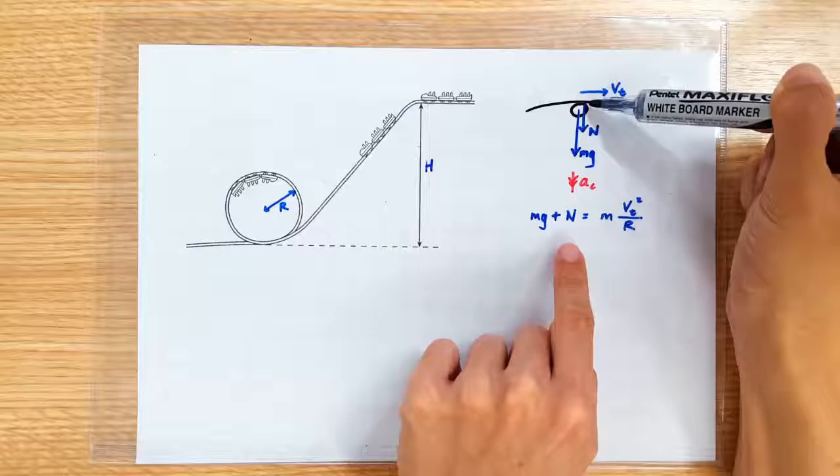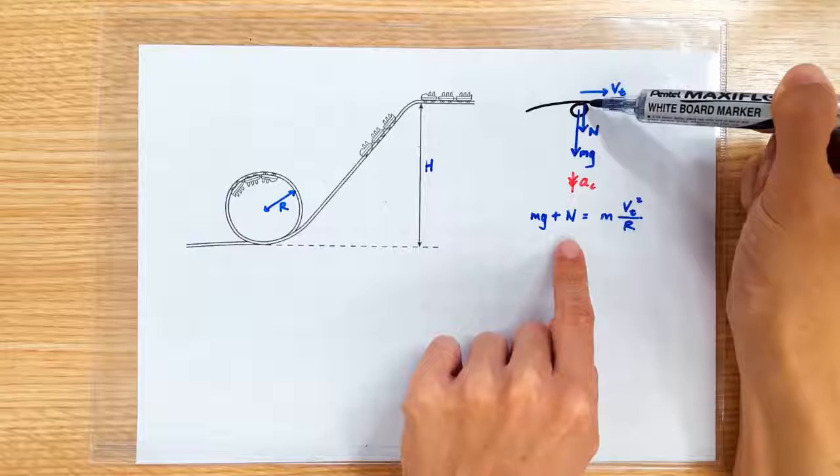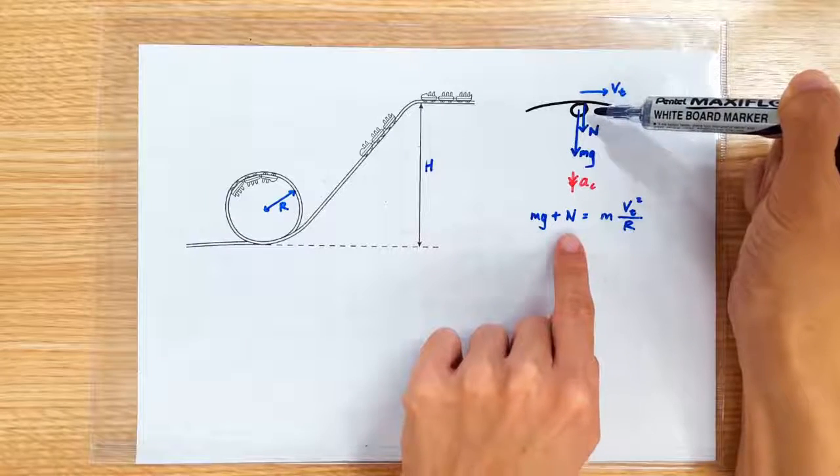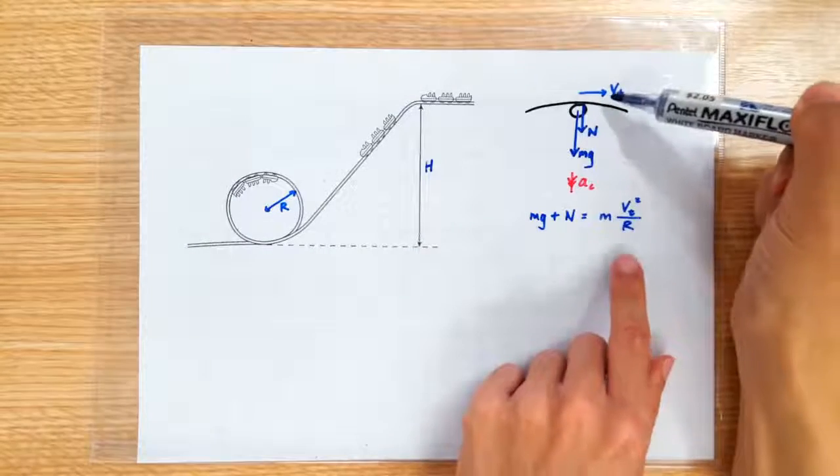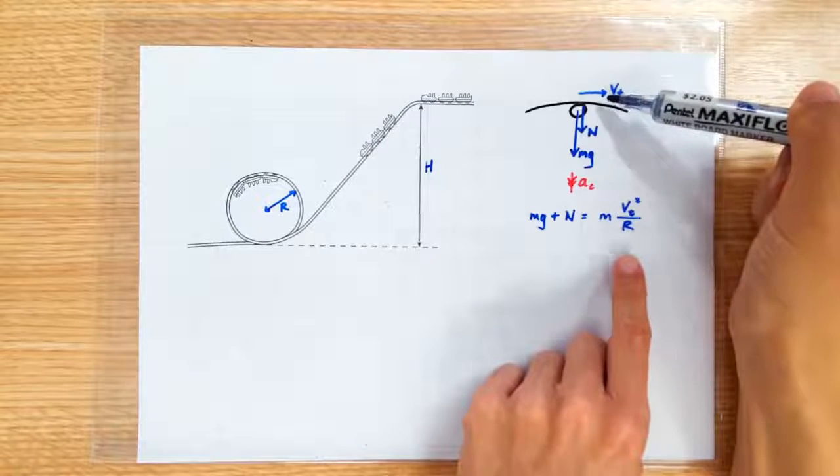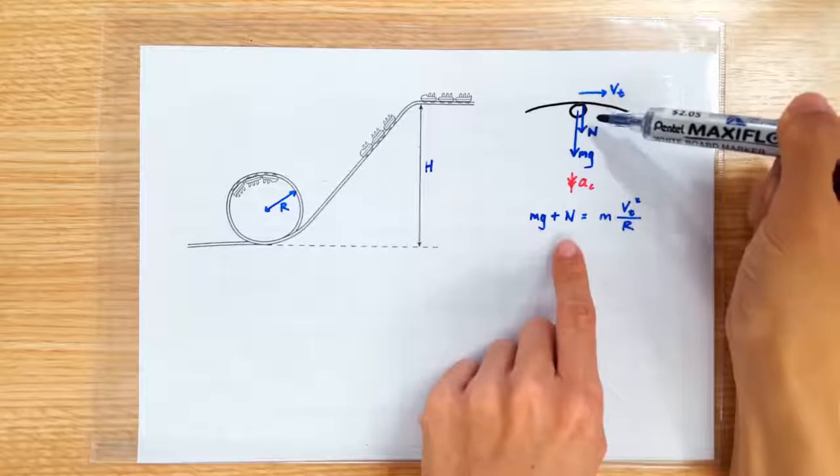Then the roller coaster and the ramp will be pressing to each other very hard, very strongly. The slower the speed at which the roller coaster arrives at the top, then the weaker the normal contact force.